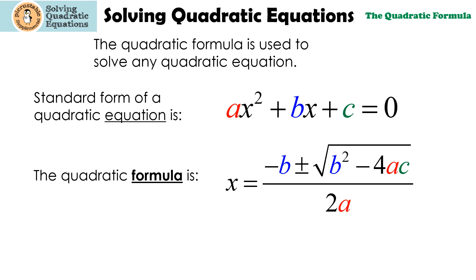We're going to use this formula: x equals negative b plus or minus the square root of b squared minus 4ac, all over 2a.